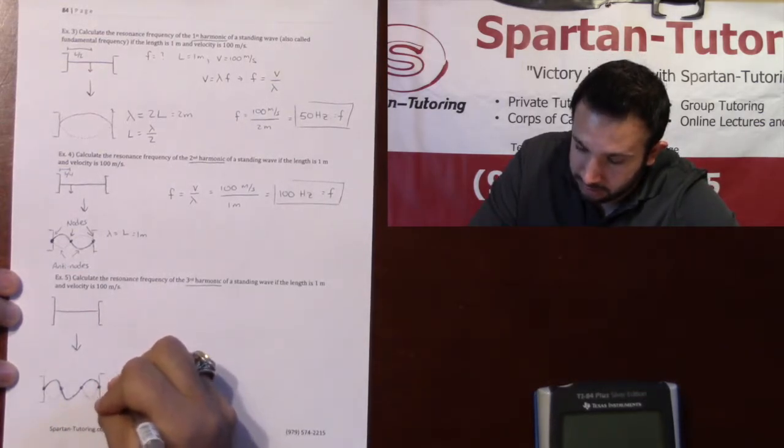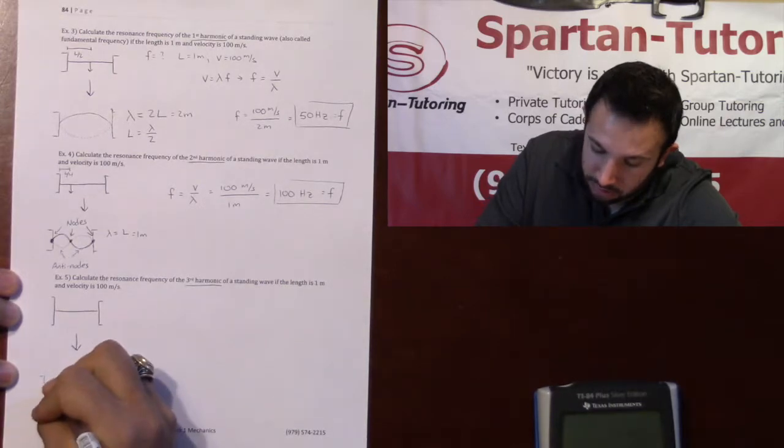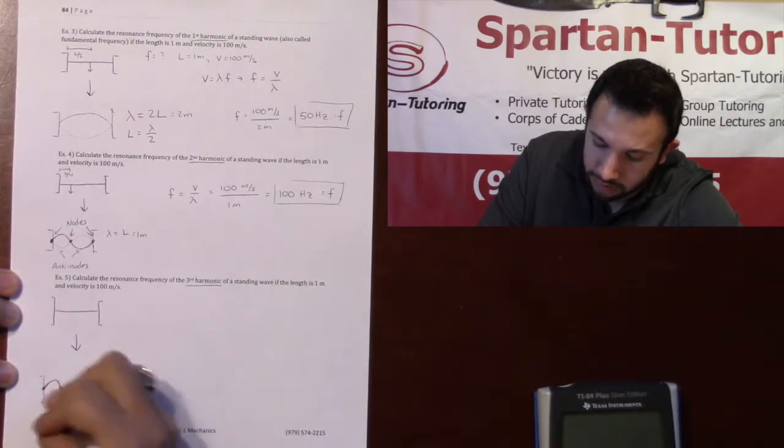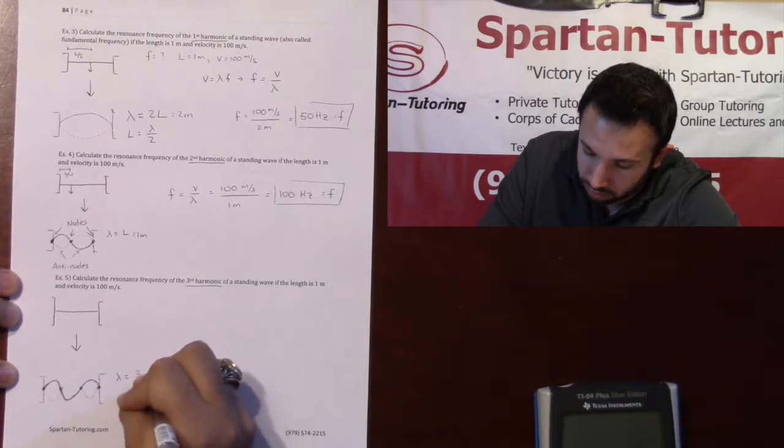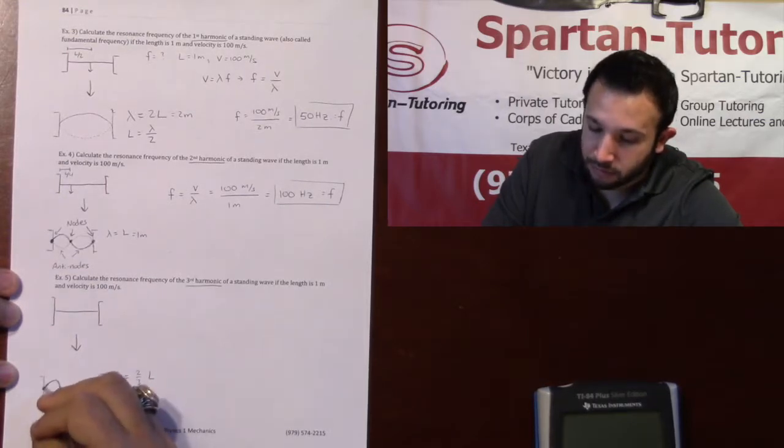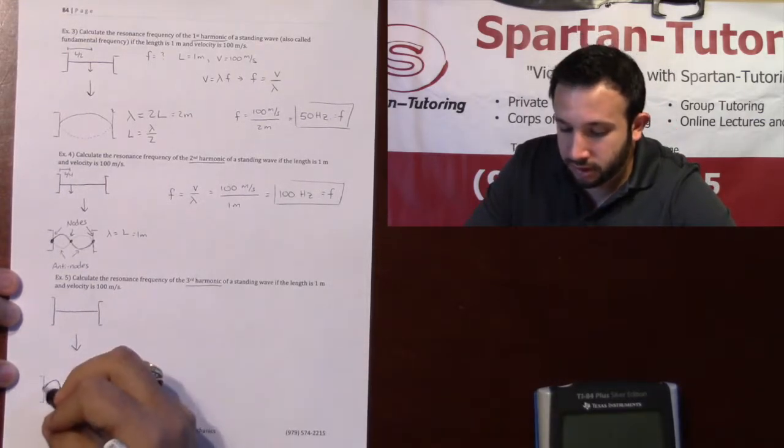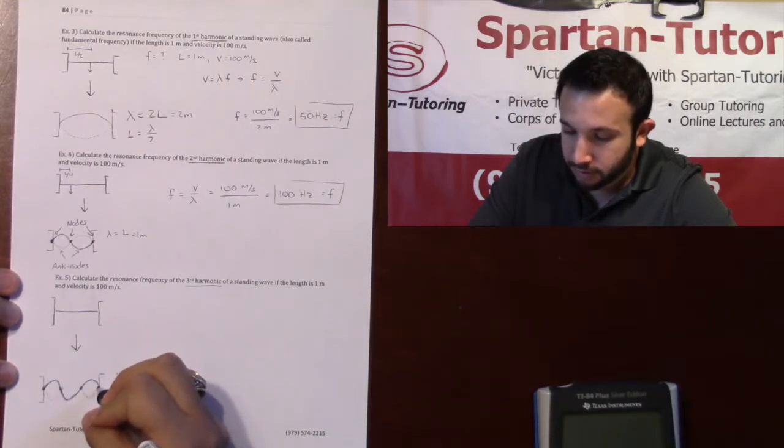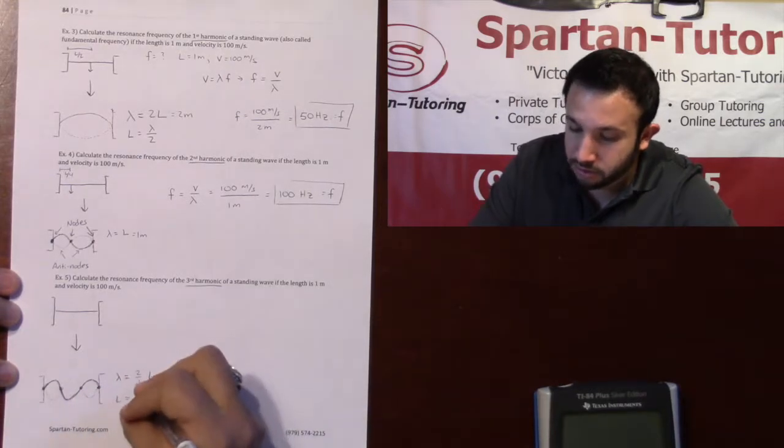And so, in this situation, notice how my lambda is now going to be my one wavelength. Notice it only reaches two-thirds L. It would be 2 over 3 L. And so, likewise, L would be three halves of a wavelength. It would be 1.5 wavelengths. Right? You go one full wavelength, and then half a wavelength.